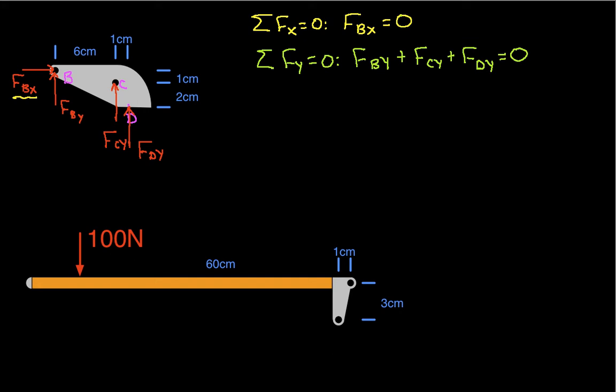We can then say that the sum of the moments about an arbitrary point, and in this case, let's choose the point C, is equal to zero. We have FBX is equal to zero, so it's not going to create any moment about C. We have FBY going up and working through a moment arm of 6 centimeters. So we'll have a clockwise moment, which is negative, so we'll have minus FBY times 6 centimeters. And then we'll have FDY, which is going up, working through a 1 centimeter moment arm, and it's going counterclockwise, so it will be positive.